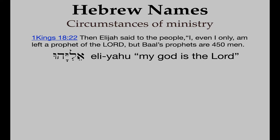Sometimes a name is related to the circumstances of the ministry. We don't know why they were named that way at birth, but the names seem to fit the ministry. In 1 Kings 18:22, Elijah says, 'I, even I only, am left as a prophet of the Lord, but Baal's prophets are 450 men.' What does Elijah mean? In Hebrew it is Eliyahu: Eli means 'my God,' and Yahu is a short form of the Lord — the tetragrammaton Yud-Heh-Vav-Heh. So his name means 'My God is the Lord,' — my God is not Baal. This is illustrated directly in the confrontation Elijah had with the prophets of Baal.